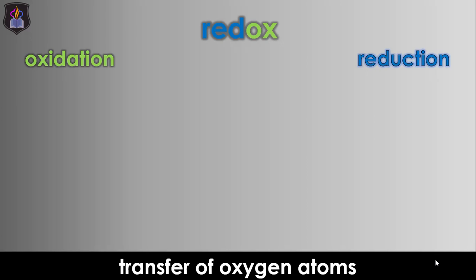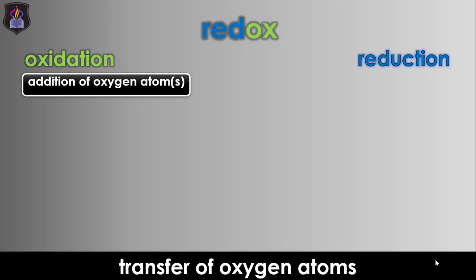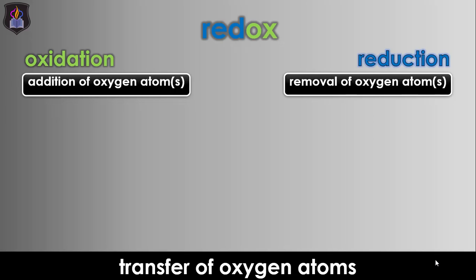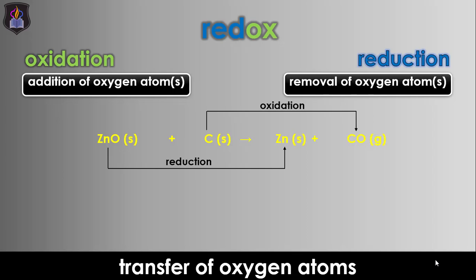In terms of oxygen transfer, oxidation is the addition of oxygen atoms to a substance, while reduction is the removal of oxygen atoms from a substance in a redox reaction. Let's consider the reaction between zinc oxide and carbon to form zinc and carbon monoxide. In this reaction, carbon is oxidized to carbon monoxide because it gained oxygen from zinc oxide, while zinc is reduced to zinc metal because it lost an oxygen atom to carbon.